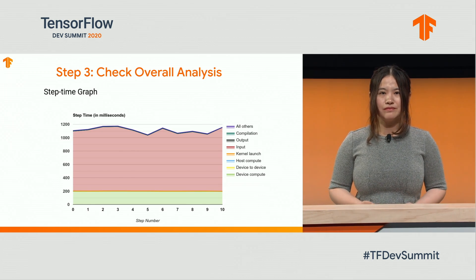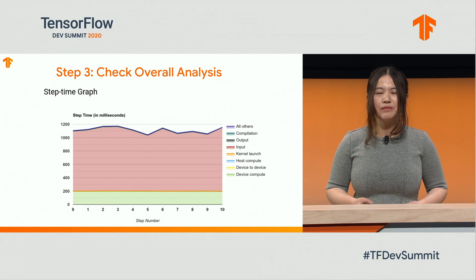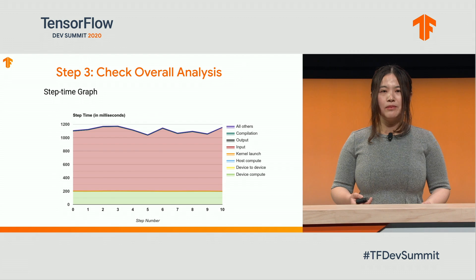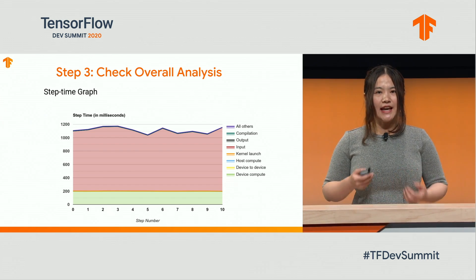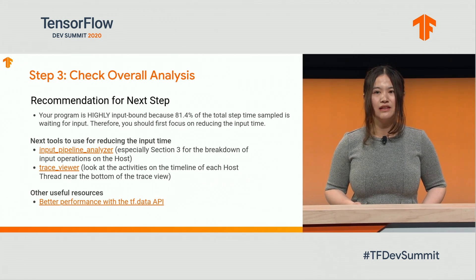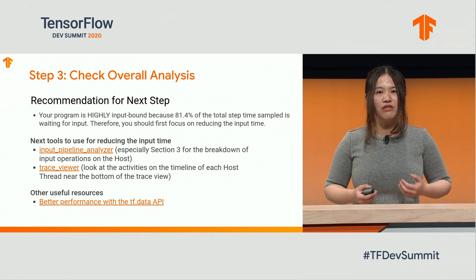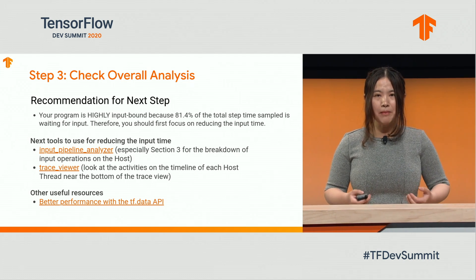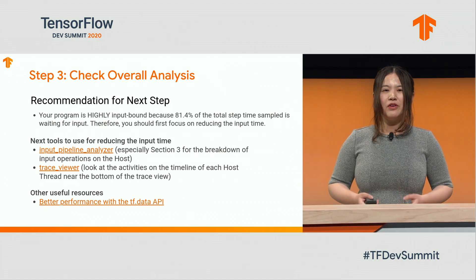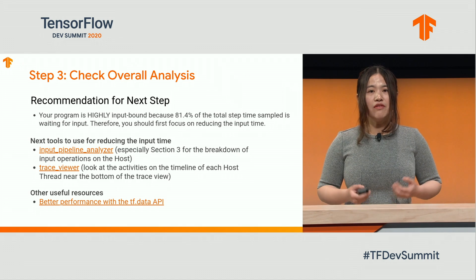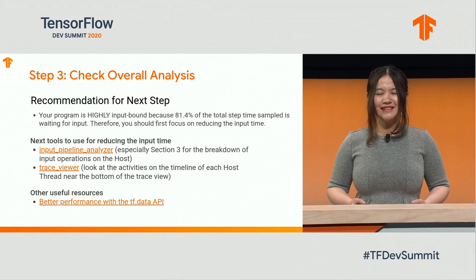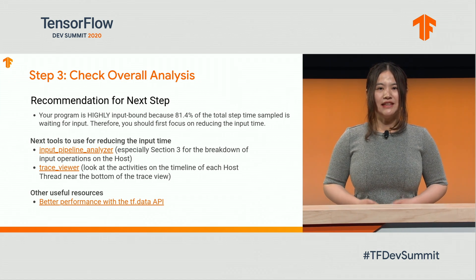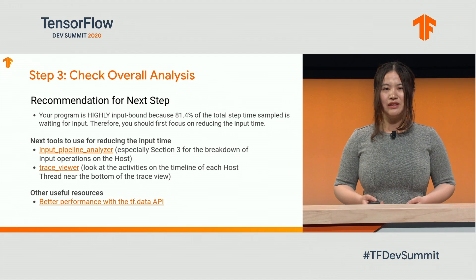The next section is the step-time graph. We can see the step-time broken down into compilation time, kernel launch, compute, and communication, and you can see how these breakdowns change over a number of steps. In this example, there's a lot of redness in the chart, indicating it is severely input-bound. The next section is what I find most exciting — the recommendation provided by our tool. It says your program is highly input-bound because 81.4% of the total step-time sampled is waiting for input. Therefore, we should first focus on reducing the input time. The Overview Page also recommends which tool you should check out next — in this example, the Input Pipeline Analyzer and Trace Viewer. It also suggests related useful resources to improve the input pipeline.